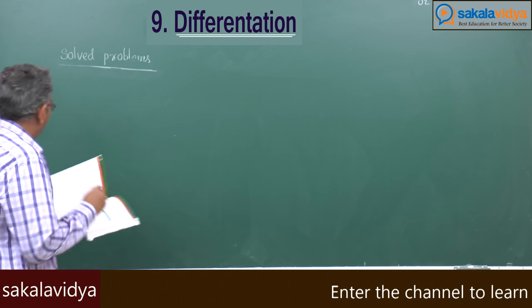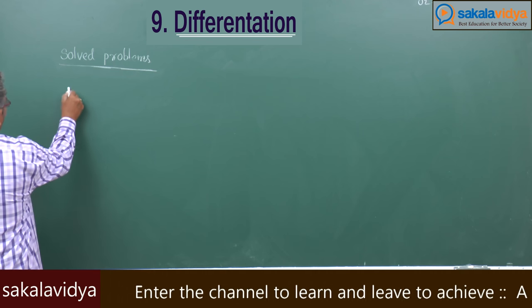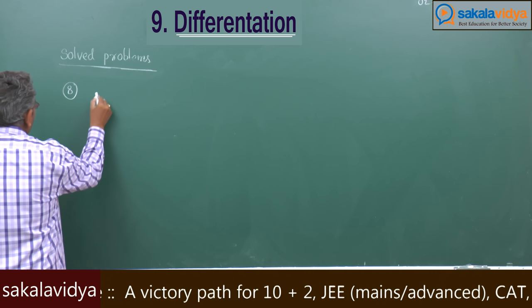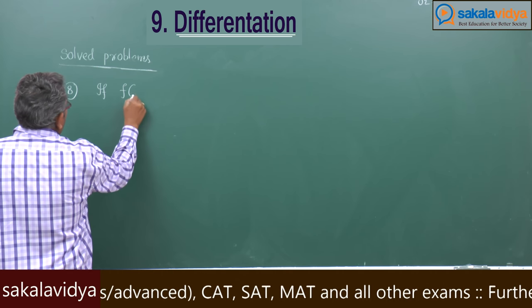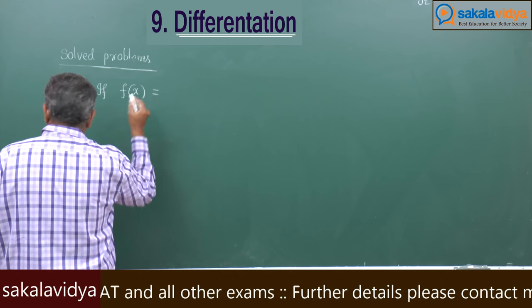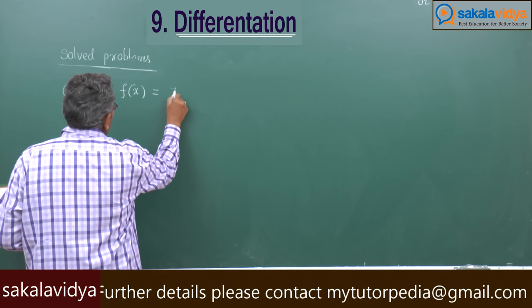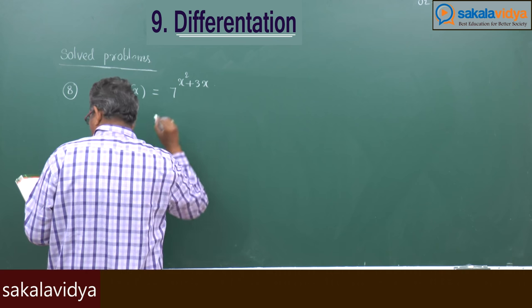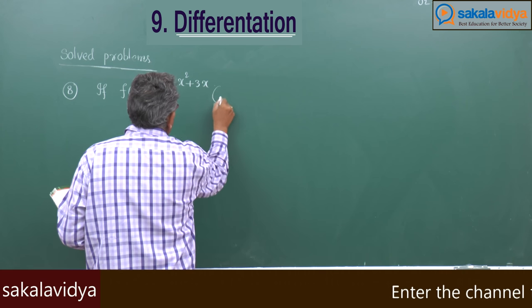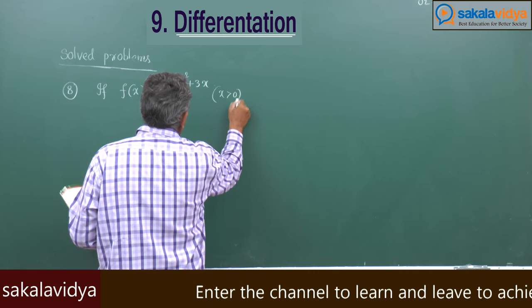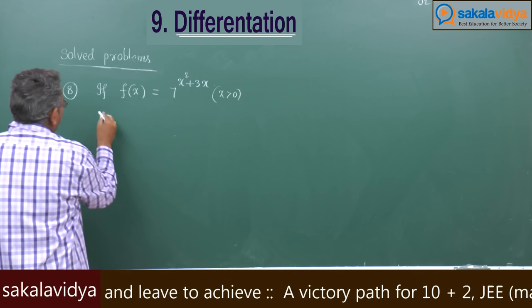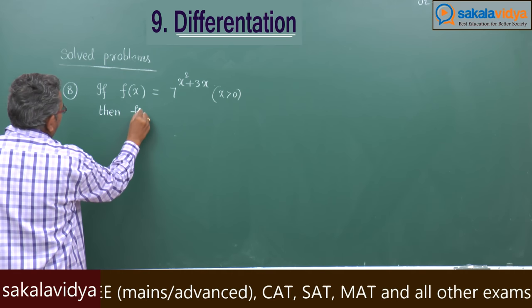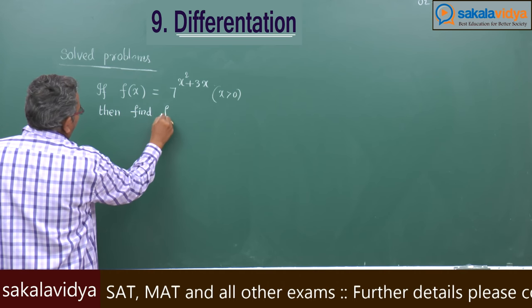Problem 8: if f of x is equal to 7 to the power of x squared plus 3x, where x is greater than 0, then find f dash x.